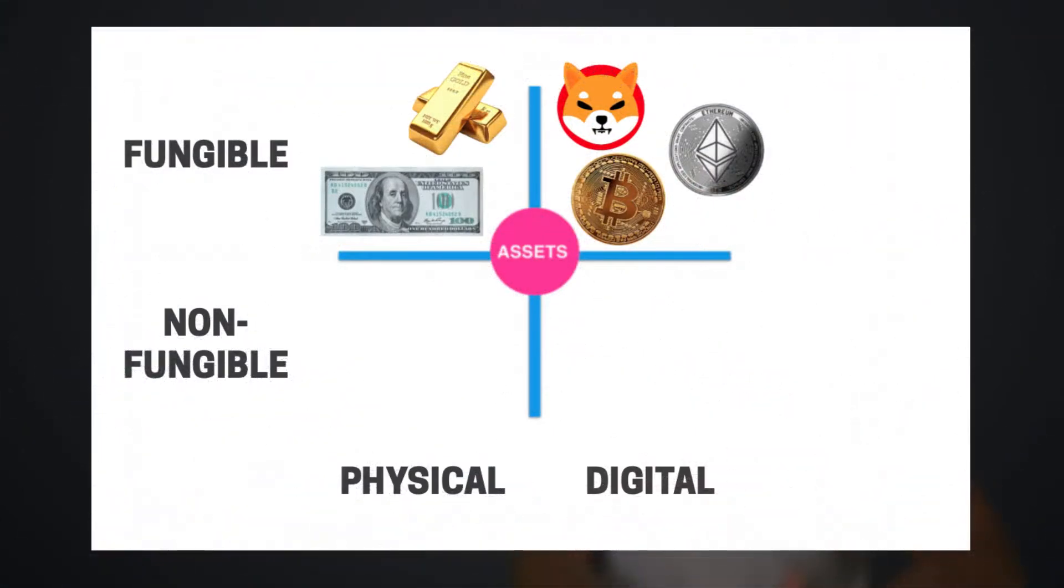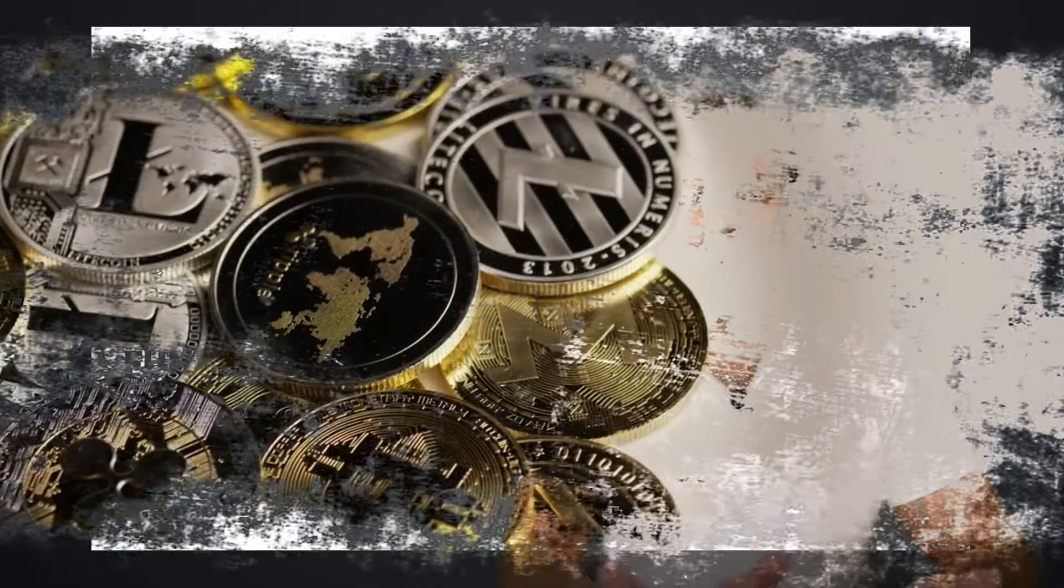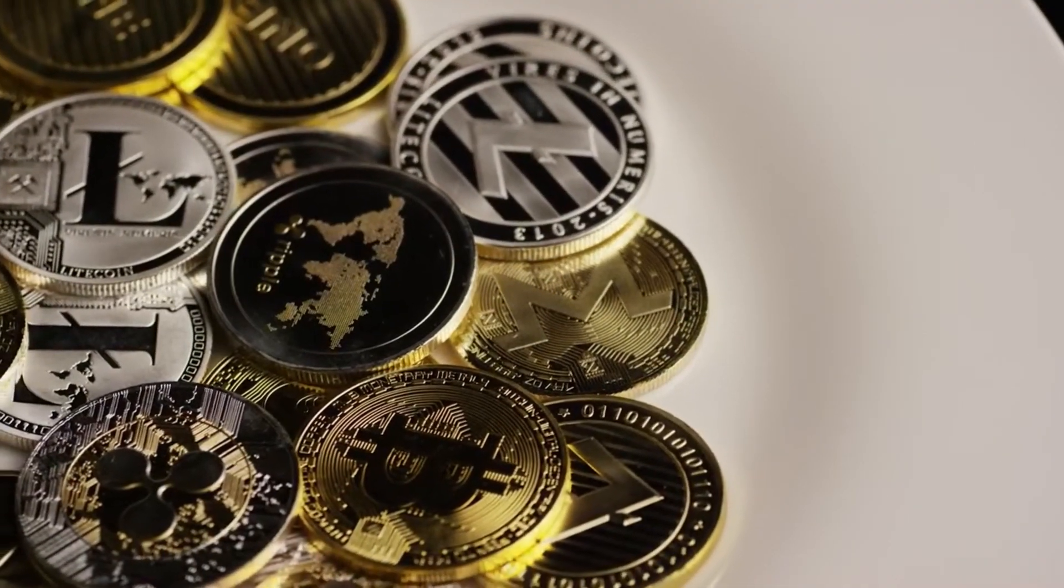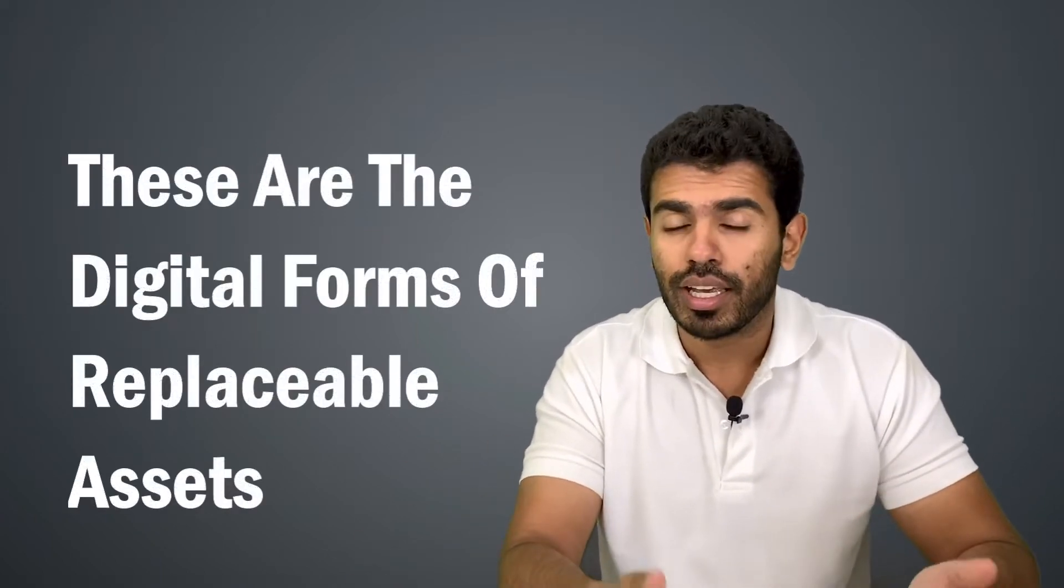On the right hand side, you have the digital format. The digital format can be a Bitcoin or Ethereum or any other cryptocurrency. So tomorrow if you are selling a Bitcoin and then let's say you are buying another Bitcoin, it doesn't have to be the same Bitcoin. It can be any other Bitcoin because it holds the same value.